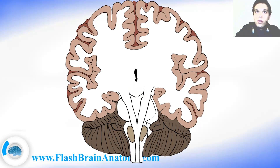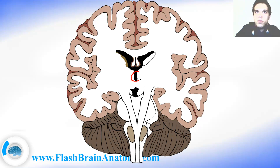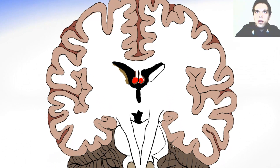Then we have the third ventricle of the brain and the lateral ventricles of the brain with the fornix. So this was the third ventricle of the brain. These are the lateral ventricles, and this and this are the fornix.